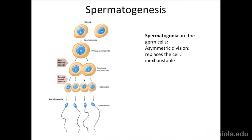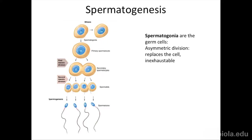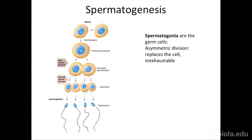The primary spermatocyte, in the context of the testes, undergoes the first meiotic division, separating homologous chromosomes. Then it goes through the second meiotic division, separating the now-recombined sister chromatids. Going through two rounds of division — in males you make four spermatids, all with just one copy of every chromosome, so they're 1N. For every primary spermatocyte that goes through meiosis, you make four spermatids, which then mature into sperm.